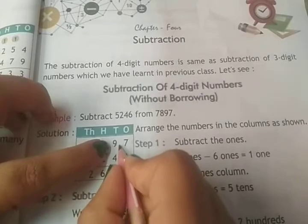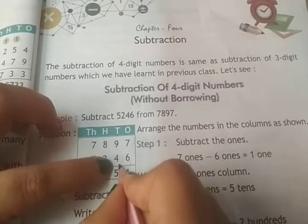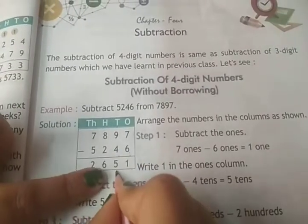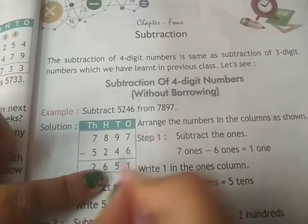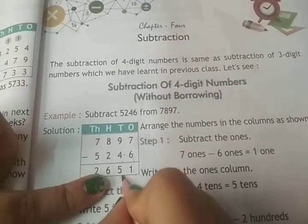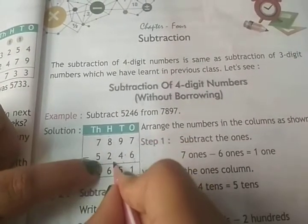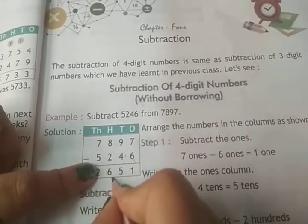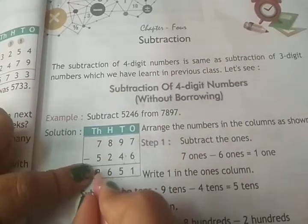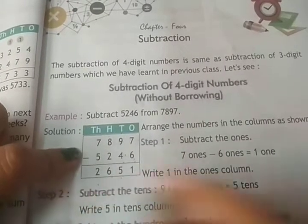Now in tens place, nine minus four — answer is five. Eight minus two — six. Seven minus five — two.